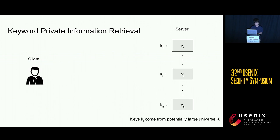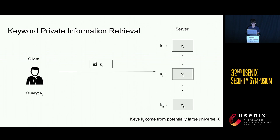Keyword PIR is a more generalized notion of index PIR, where instead of each value being associated with an index from one to n, it's associated with some keyword from a potentially large universe K. Other than that, it's basically the same as index PIR: if the client wants to query for a keyword ki, it sends some encryption of the keyword ki to the server, which will process it to return the associated value. The security requirement is basically the same in this setting as well.